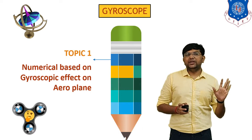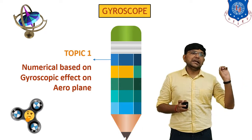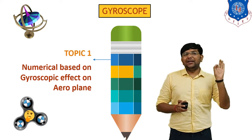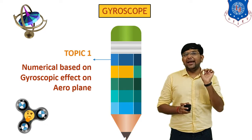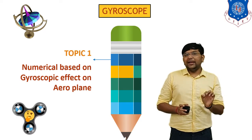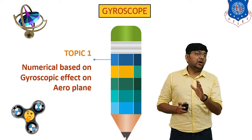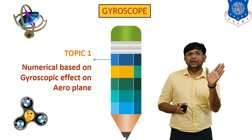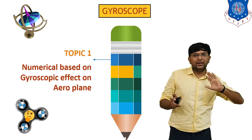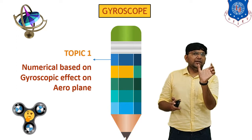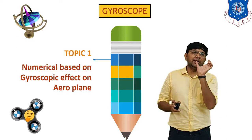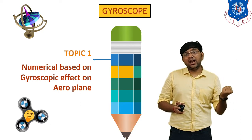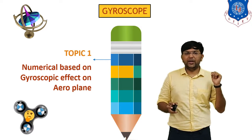There is only one equation of reactive gyroscopic couple in this topic: Couple C = I·ω·ωp. Capital C indicates the reactive gyroscopic couple, capital I indicates moment of inertia, ω indicates the angular velocity of the propeller, and ωp indicates the angular velocity of the aeroplane while taking a turn — either left or right. You have to calculate the reactive gyroscopic couple and discuss which type of impact it produces.